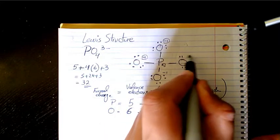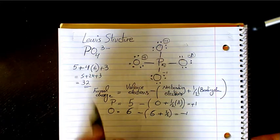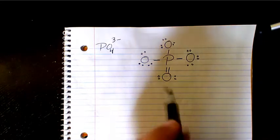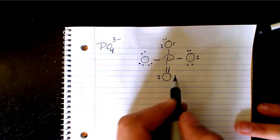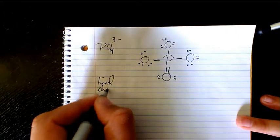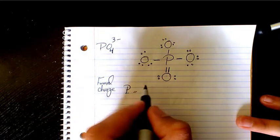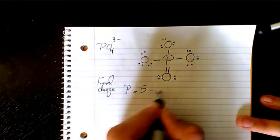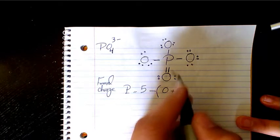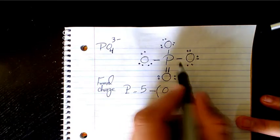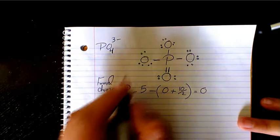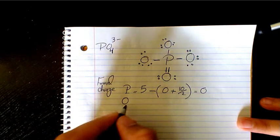Since phosphorus has a +1 formal charge and each oxygen has −1, let's see what happens if we introduce a double bond on one of the oxygens. Recalculating for phosphorus with the double bond: 5 minus 0 non-bonding electrons minus half of 10 bonding electrons equals 0.